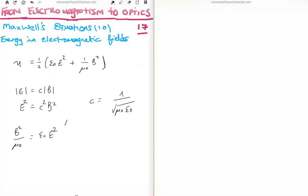So what we're going to do is plug that into our initial formula. And what we find is that one half epsilon zero E squared plus epsilon zero E squared is equal to the energy density.